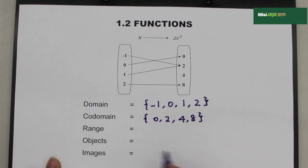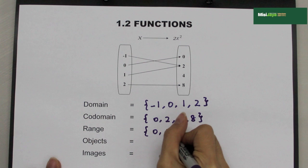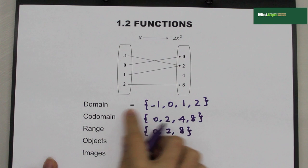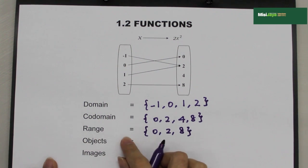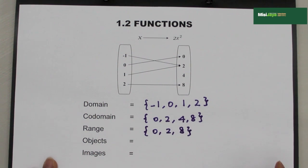And the range will be {0, 2, 8}. Remember: the domain, codomain, and the range. The answers, you have to write the curly brackets.